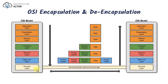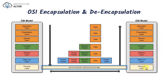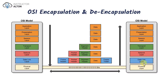Then it goes down to the physical layer, where it's actually sent across the wire as electrical signals — the bits, the ones and zeros. Once it gets to the destination on the other end of the cable, all this information gets stripped off as it goes up the OSI model. The data link layer strips off the frame header, then the packet header, then the segment header, and then everything gets reassembled into data at the upper layers.